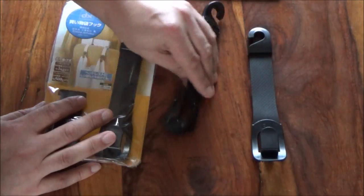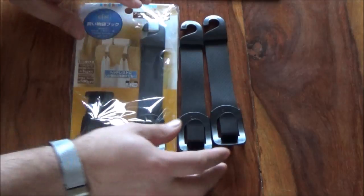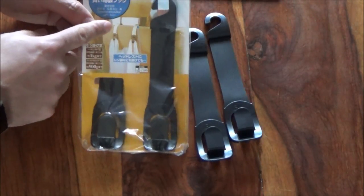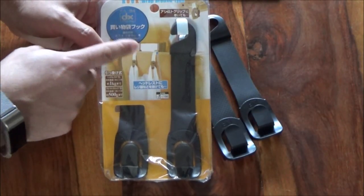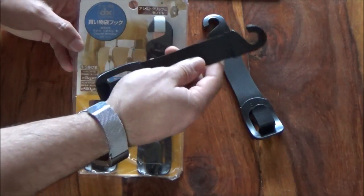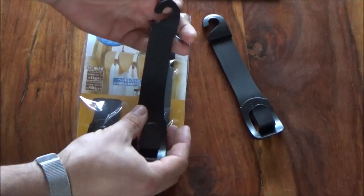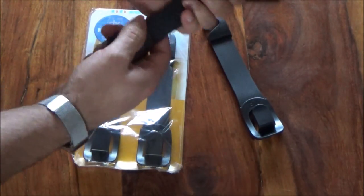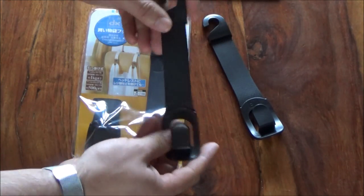We also have here some shopping straps. So you can strap these. I don't know if you can see that very well there, but this is the headrest of the back seat of a car or the front seat of a car. And you can use these little hooks here to strap on to the headrest. And then you can put your shopping bags in this. And this is really quite durable. So that's sort of cool.